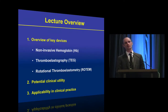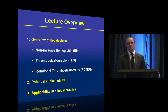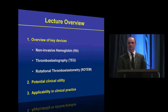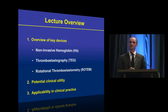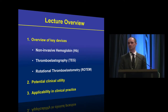What we're going to aim to do over the next 30 minutes is provide an overview of these key devices for assessing the maternal hemoglobin concentration as well as the maternal coagulation profile. We'll look at non-invasive hemoglobin technology, discuss thromboelastography or TEG and rotational thromboelastometry, which is ROTEM. Then, once we've looked at the mechanics of how these devices work, we'll consider how clinically useful they may be and whether we can integrate them into our clinical obstetric anesthesia practice.